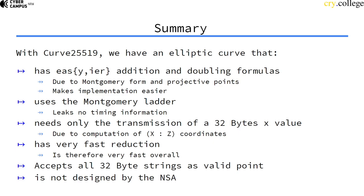It has a very fast reduction because it's close to a power of two, and it actually accepts all 32-byte strings as valid points, as input x coordinates, which is quite good because you don't need to do proper point validation then.